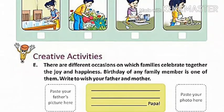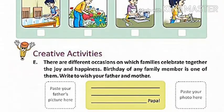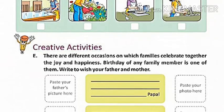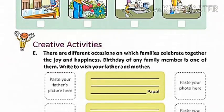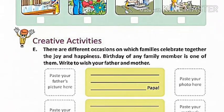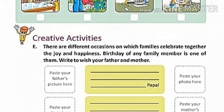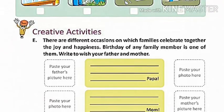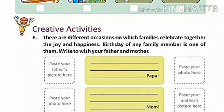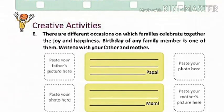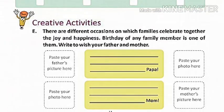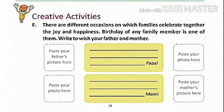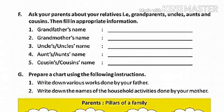Just below that we have creative activities, exercise E. There are different occasions on which families celebrate together — joy and happiness. A birthday of any family member is one of them. Write to wish your father and mother. Paste your father's picture on the left and your photo on the right and write some lines. Similarly, do the same for your mother.